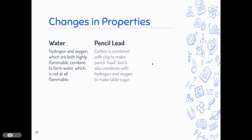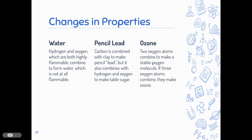Pencil lead is another example — carbon is combined with clay to make pencil lead, and carbon also combines with oxygen and hydrogen to make table sugar. Those molecules have extremely different physical properties. We also have ozone: if you have two oxygen atoms bonded together, that's diatomic oxygen — just regular oxygen in the air. If three oxygen atoms bond together, that's called ozone, which has completely different properties than diatomic oxygen.